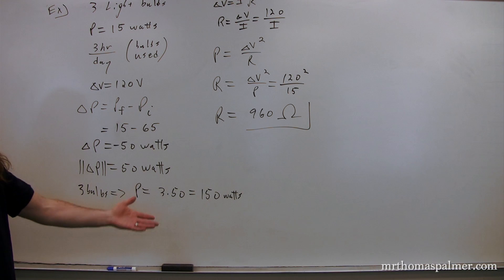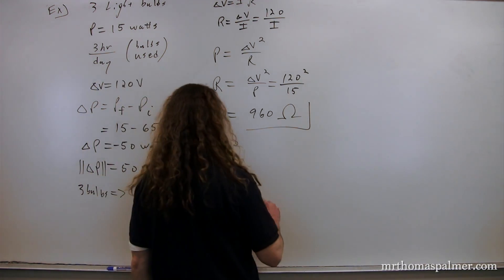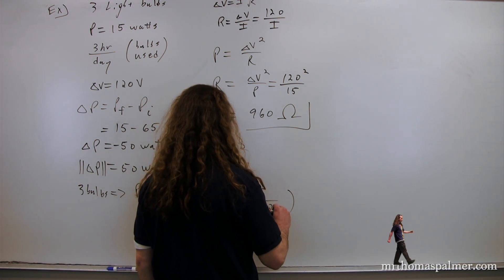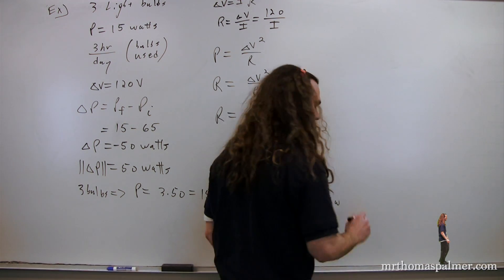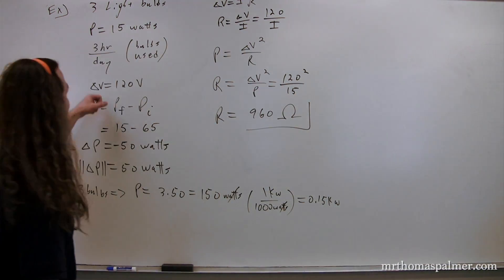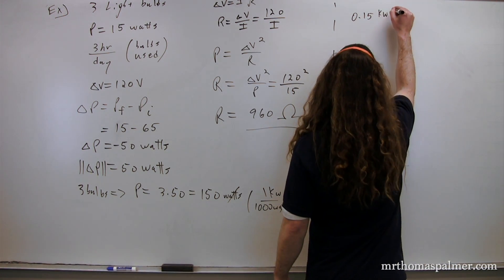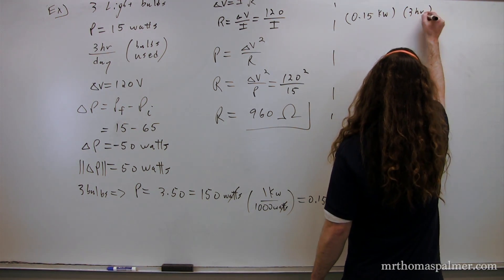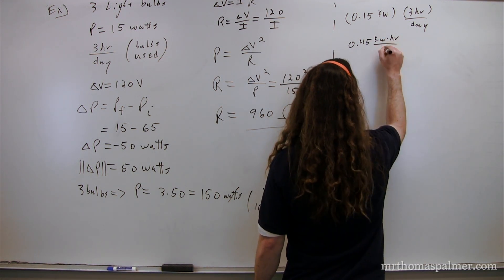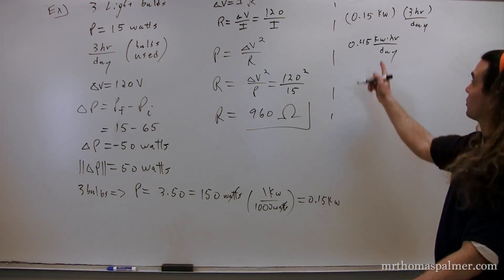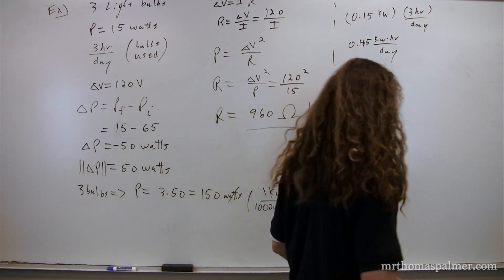So, now our goal is to figure out how much it costs to run these three bulbs three hours a day. So, we have the amount of watts. Let's convert it over to kilowatts. So, we have 1,000 watts on the bottom, 1 kilowatt on the top, and the power ends up being 0.15 kilowatts. We need to get to kilowatt hours, so we're going to multiply that by our three hours per day. This means that we have 0.45 kilowatt hours every day, assuming that we have our light bulbs on for three hours a day.